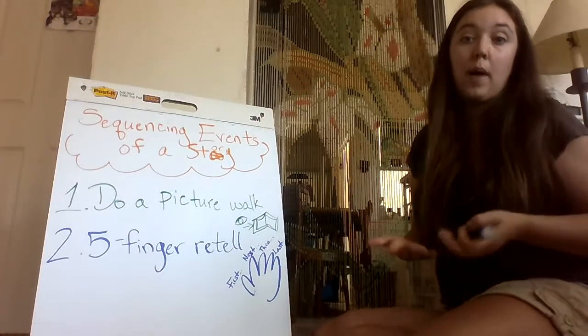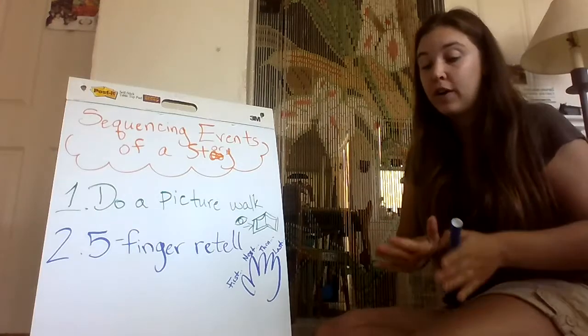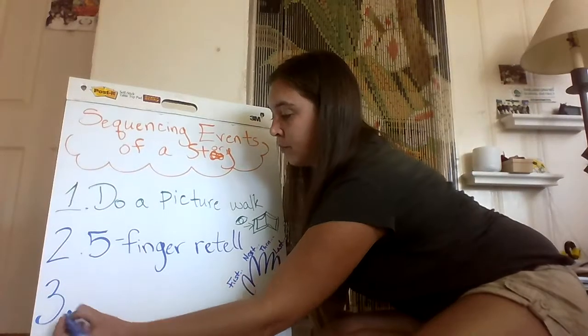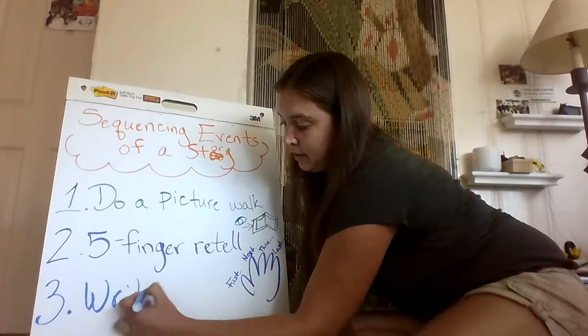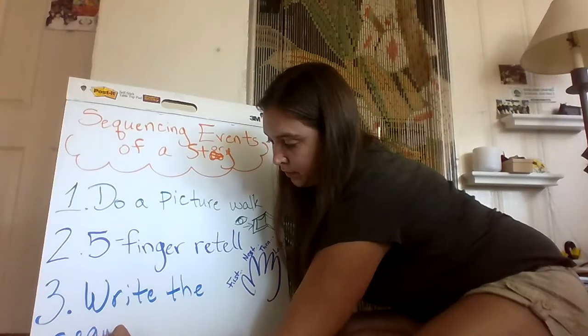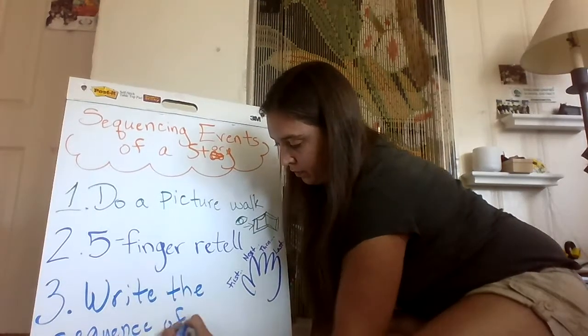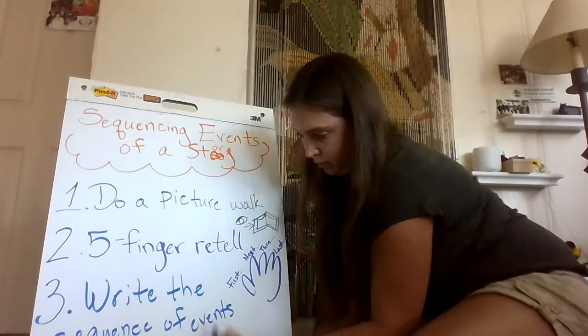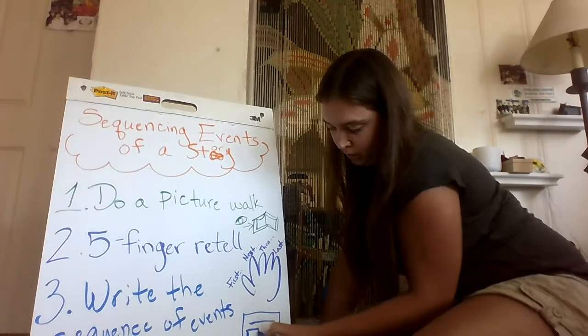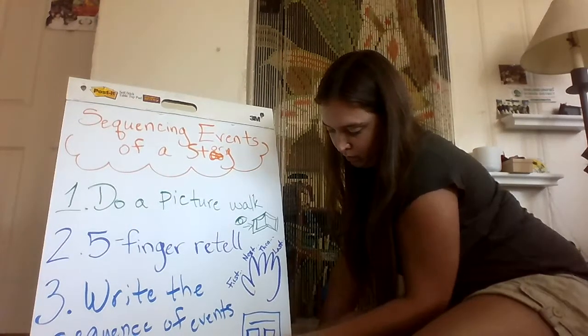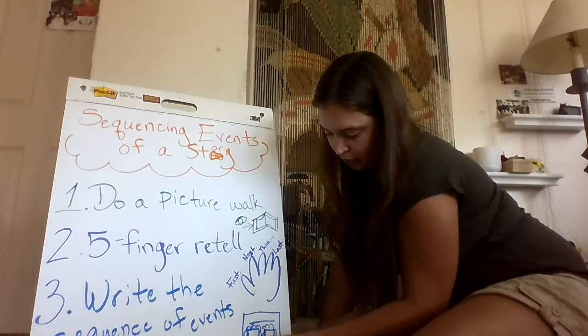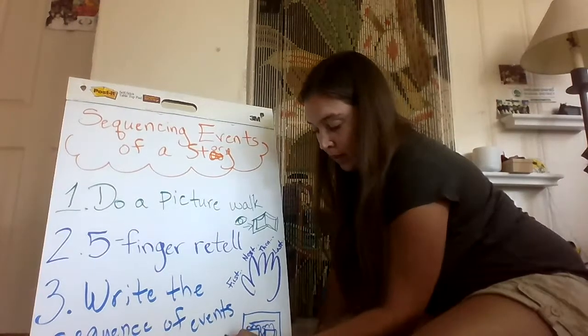And after thinking about what happened in the book with the picture walk and with the five-finger retell, we were then ready to write about the book. So number three, write the sequence of events. That worksheet is a little prettier than my picture here, but let me try our best. I'll draw a little pencil.